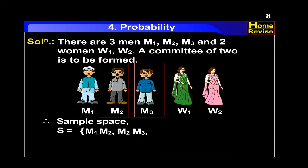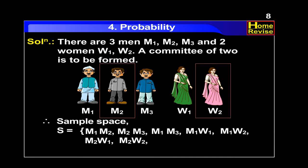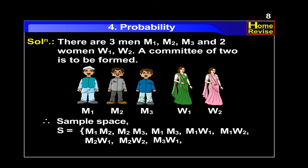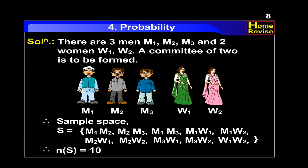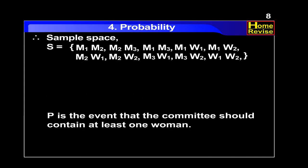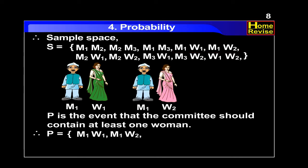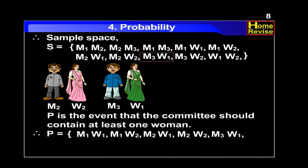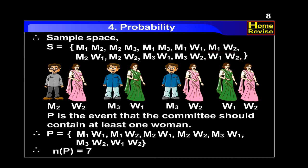m1 m2, m2 m3, m1 m3, m1 w1, m1 w2, m2 w1, m2 w2, m3 w1, m3 w2, w1 w2. Therefore n of P is equal to 7.